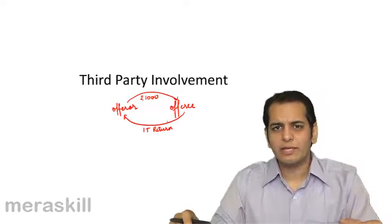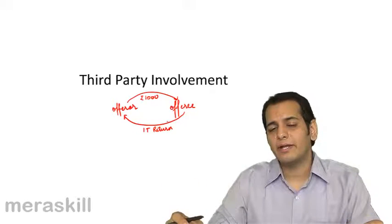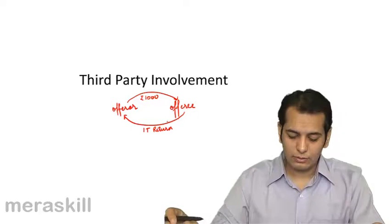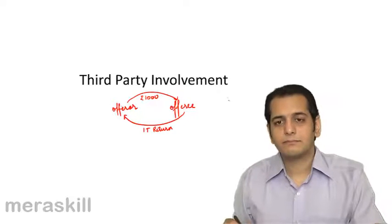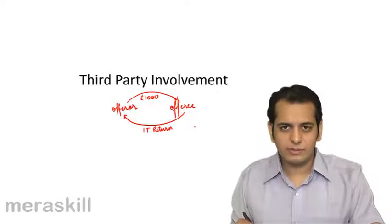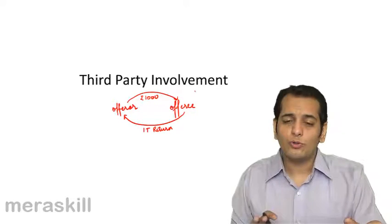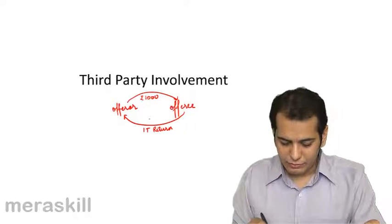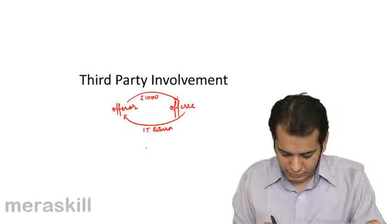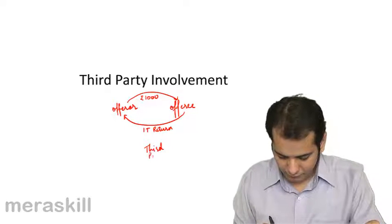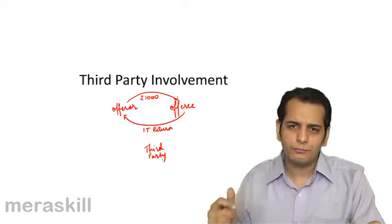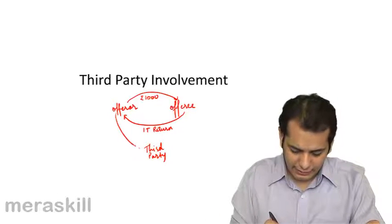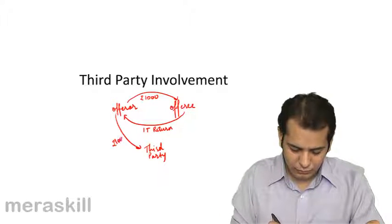What do you think would be the case when the third party would enter this contract? Now this offeree is to receive 1000 from the offerer. What if the offeree says you do not pay me 1000. There is a person, let's say third party. I owe him 1000, that is I need to pay him 1000. So what you do is directly pay him rupees 1000 which you were supposed to give me.